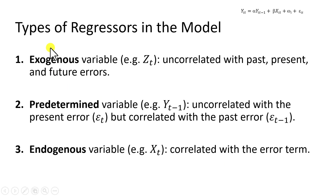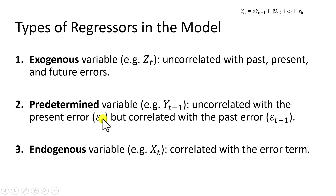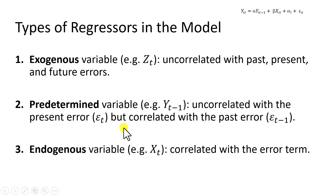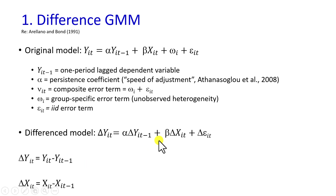There are three main types of variables we encounter in this type of estimation. Exogenous variables are those that are uncorrelated with the error term. Predetermined variables are uncorrelated with the present error term but correlated with the past error, an example of which is the lag-dependent variable, which is included as a regressor in the dynamic model. Endogenous variables are correlated with the error term.